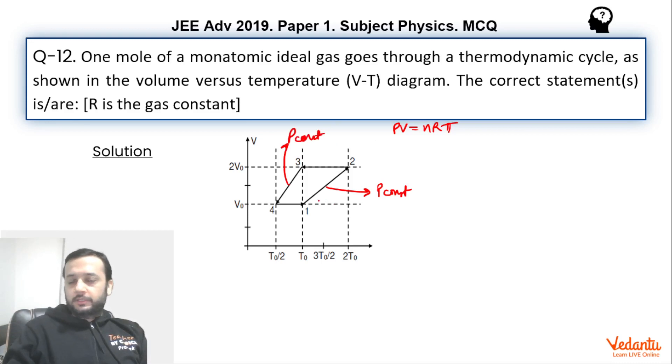Now if we talk about Q12, Q12 will be simply n CP delta T. N is 1, monatomic, CP is 5R by 2. And delta T, you can see from point 1 to 2, is 2T0 minus T0, so it becomes T0.